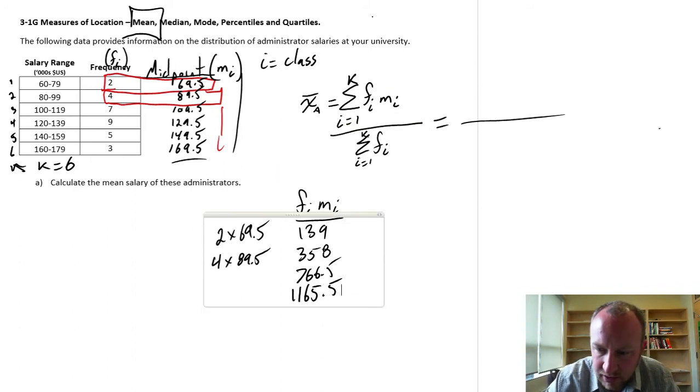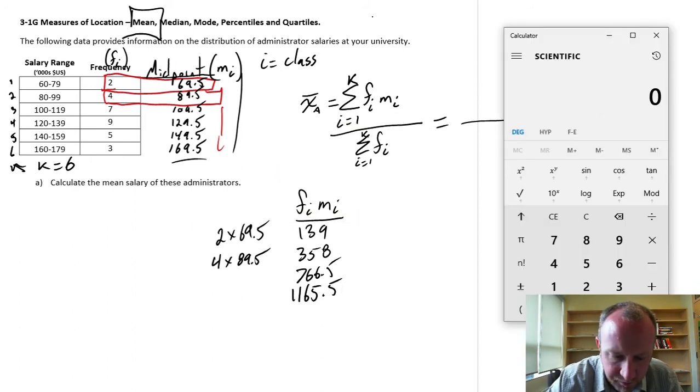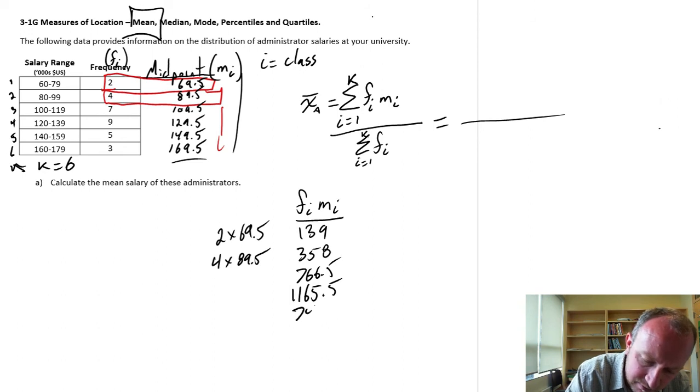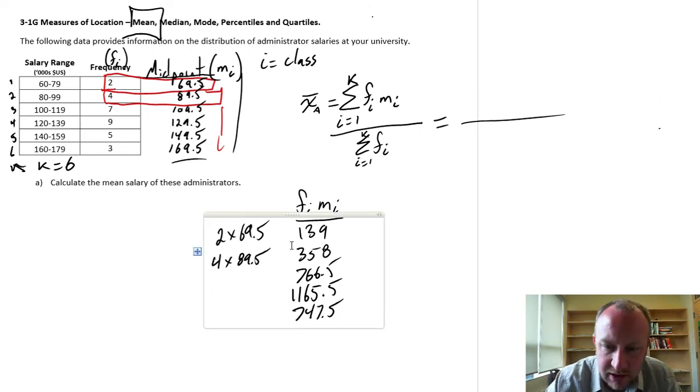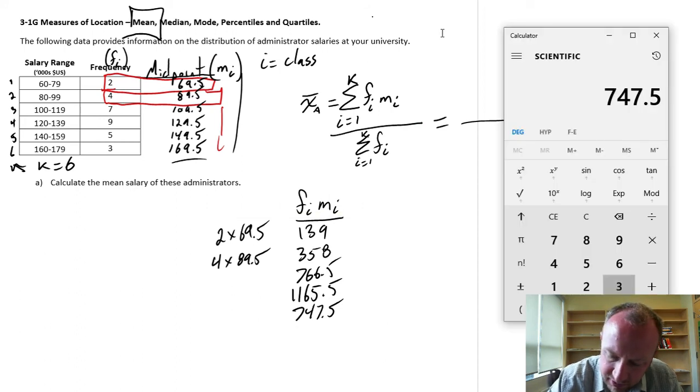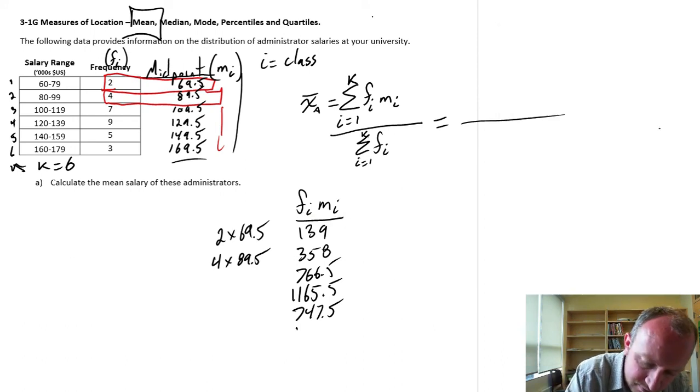Okay, and just a couple more to go. 5 times 149.5 is 747.5. And the last one, my frequency is 3 times 169.5, so 508.5.